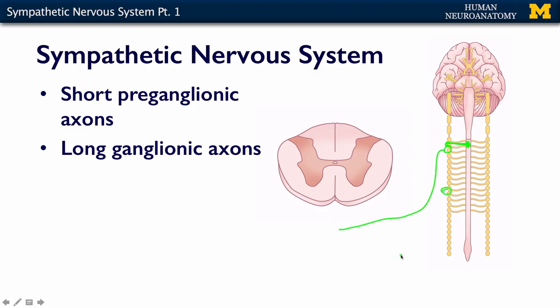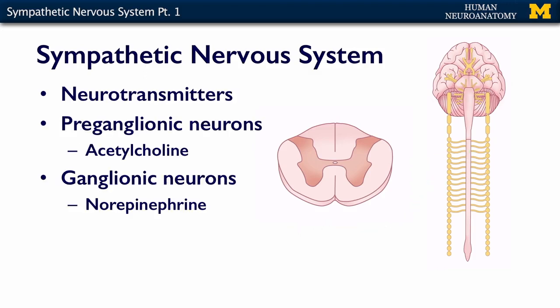So the bottom line is short preganglionic axons — neuron A in the cord going out to the ganglion, and then neuron B in the ganglion going out to the target.